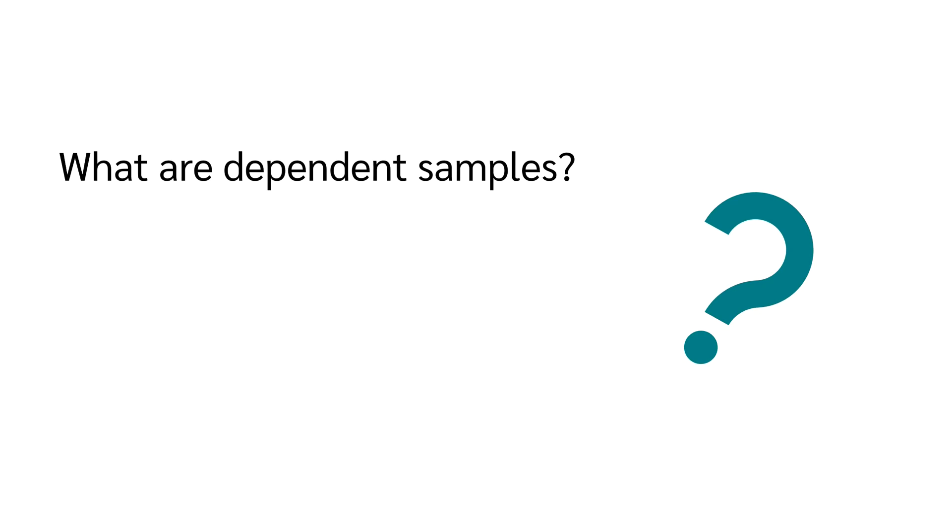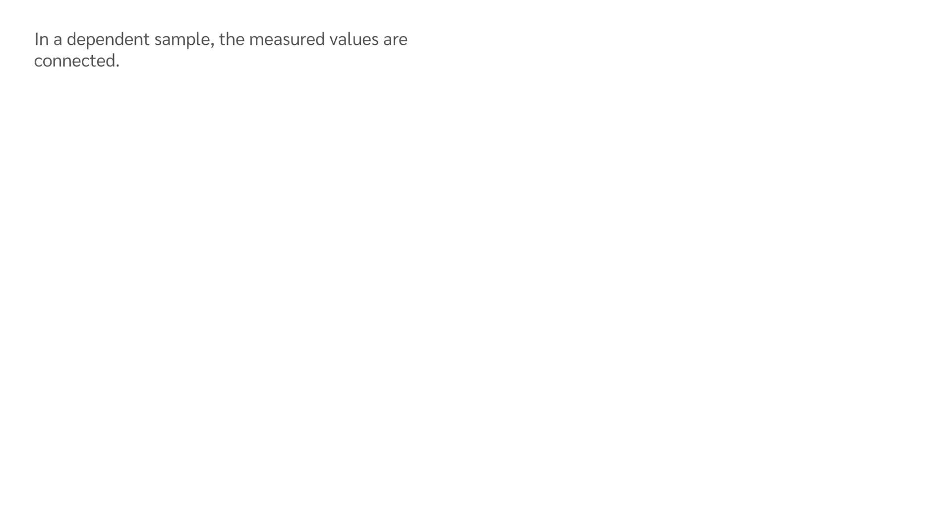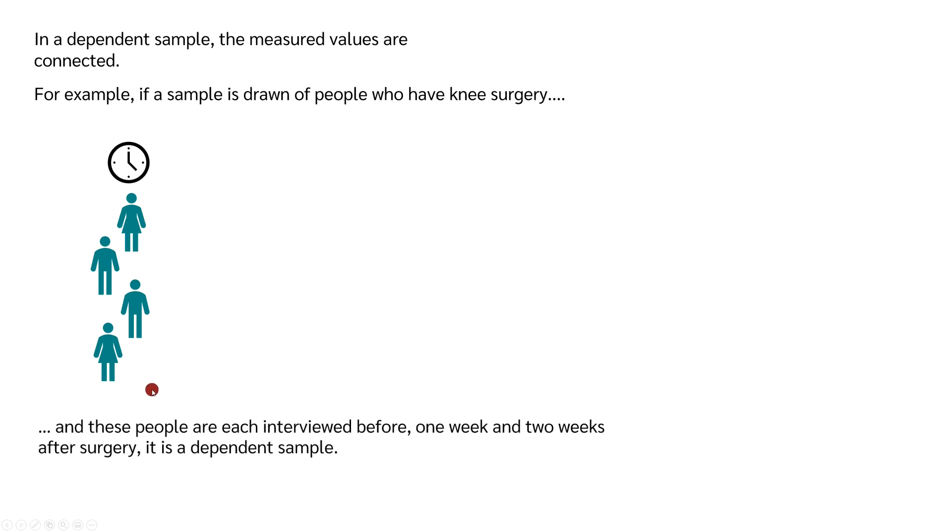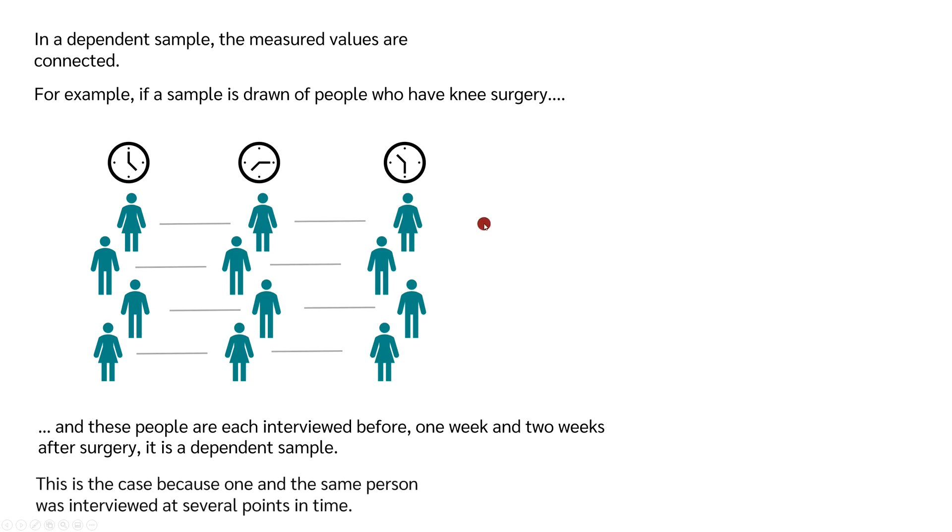What are dependent samples? In a dependent sample, the measured values are linked. For example, if a sample is drawn of people who have a knee surgery, if these people are asked before the surgery and one week and two weeks after the surgery, we call it a dependent sample. This is the case because the same person was surveyed at several points in time.